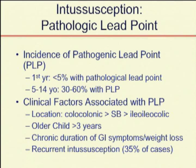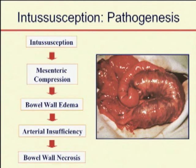This is the kind of pathologic process that occurs and why it's a problem. An intussusception results in mesenteric compression, leading to venous congestion and swelling of the intestine, eventually leading to arterial insufficiency and full thickness necrosis, hopefully not before you get there.